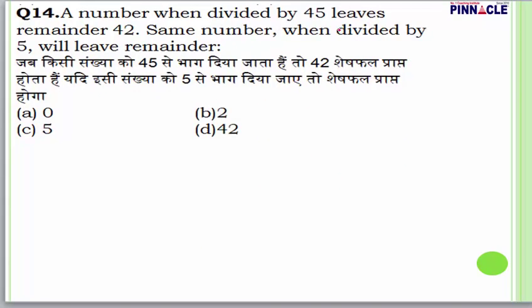Question number 14: A number when divided by 45 leaves remainder 42. When the same number is divided by 5, the remainder would be? In such questions, directly divide the original remainder 42 by 5: 42 divided by 5 gives remainder 2. Answer is B.